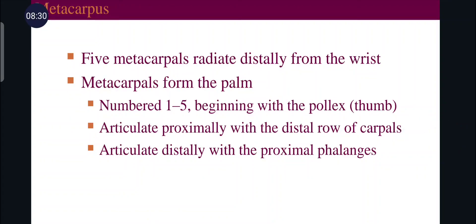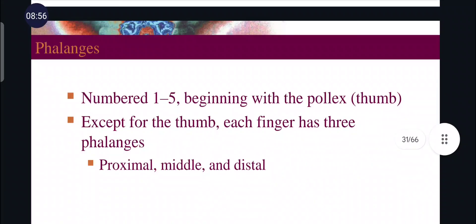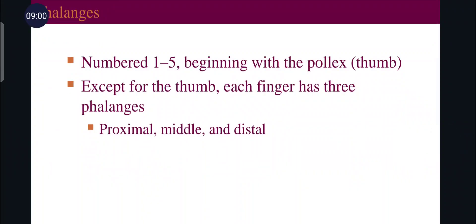Five metacarpals radiate distally from the wrist forming the palm. They are numbered one to five, beginning with the pollex — the thumb bone. They articulate proximally with the distal row of carpals and distally with the proximal phalanges. Phalanges — the bones of the fingers — are numbered one to five beginning from the thumb. Except the thumb, each finger has three phalanges: proximal, middle, and distal. The proximal phalanx is nearest to the palm, middle is next, and distal is the last.